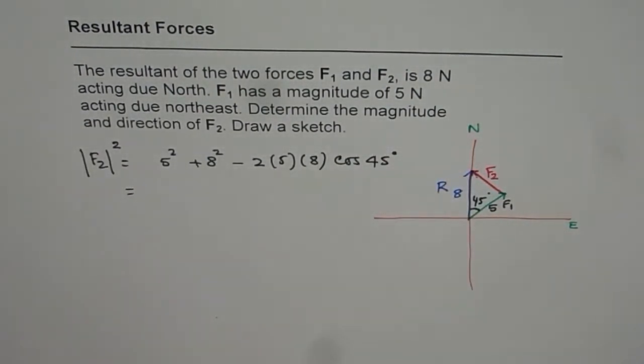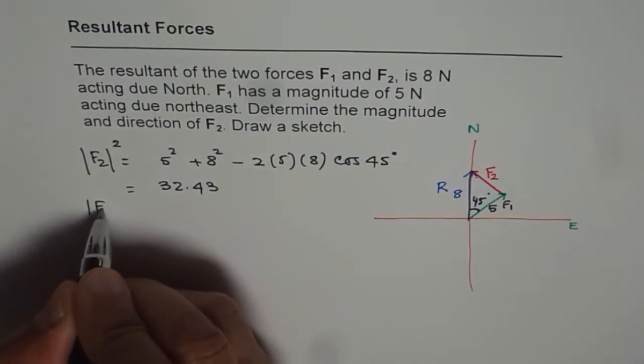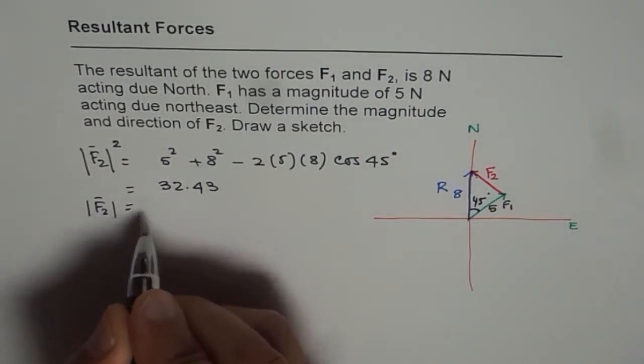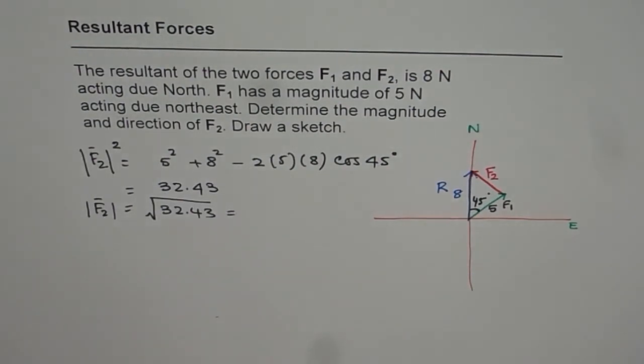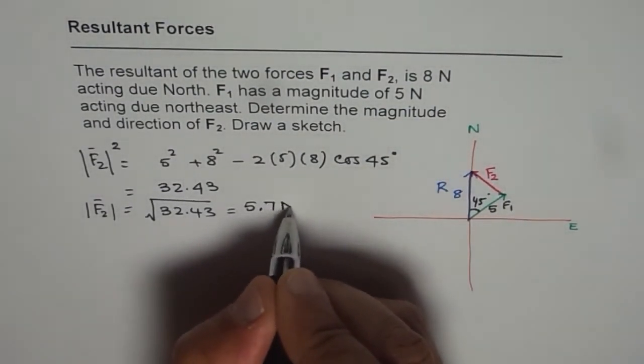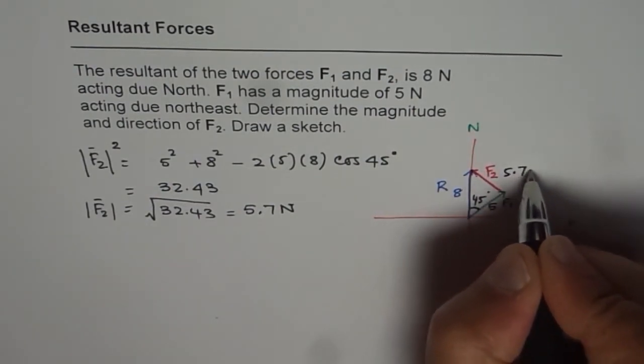Now we can use calculator and figure this out. So it is 5 square plus 8 square minus 2 times 5 times 8 times cosine of 45 equals to, let's put it in decimals, 32.43. So magnitude of F2 is going to be equal to square root of 32.43. So square root of this is equal to 5.69. So let me write this as 5.7 newtons. So now we know the magnitude of F2 and it is equal to 5.7 newtons.